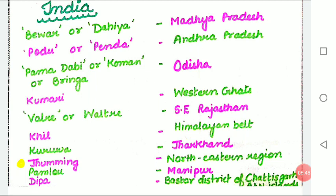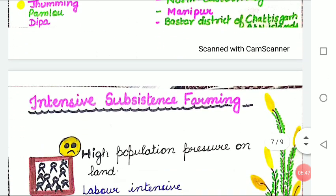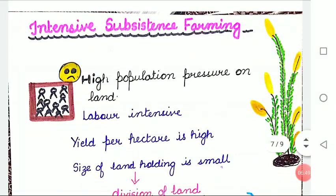Please write down all the names and learn them. Now, intensive subsistence farming. What is intensive subsistence farming? It is practiced in areas of high population pressure on land. It is labor-intensive farming, meaning more labor is used rather than machines. Yield per hectare is high because high doses of biochemical inputs and irrigation are used.